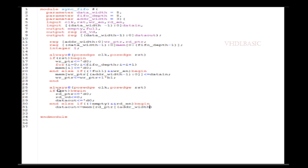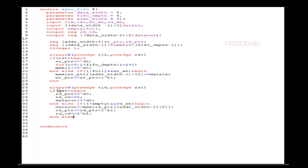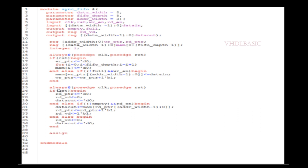The second always block represents the read operation. When reset is asserted, we initialize the read pointer, read_valid, and data_out. In the else-if condition, we check whether the FIFO is empty. If the FIFO is empty, we should not read data. If the FIFO is not empty and a read enable is received, we read data from memory, assign it to data_out, set read_valid to indicate valid data, and increment the read pointer. Each memory location can only be read once — that is the concept of FIFO.